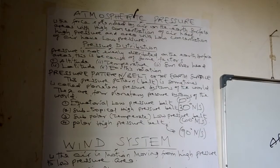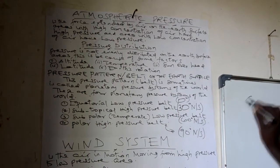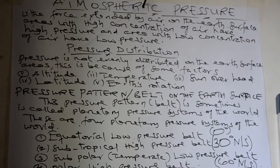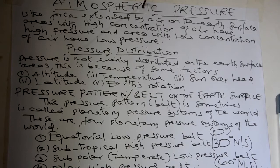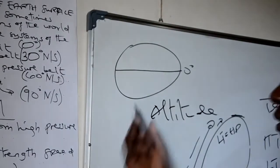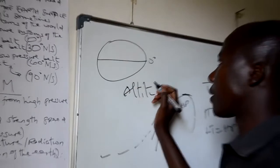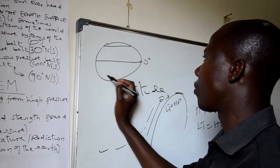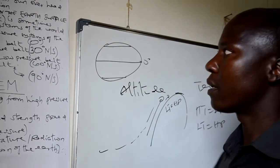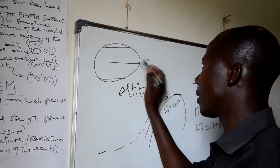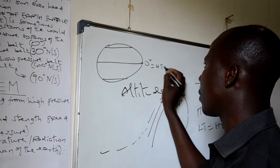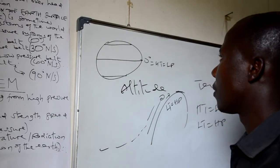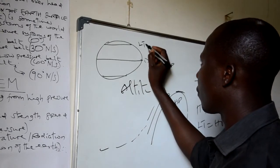Another factor influencing the distribution of pressure is sun overhead. When you draw our earth or our sphere, the line which divides the earth into two parts is the equator. When the earth is revolving on its axis, the sun can be nearby the equator or far away, either toward Cancer or Capricorn. Therefore, when the sun is overhead a particular area, it is associated with high temperature and low pressure. But wherever the earth is far away from the overhead of the sun, it is associated with low temperature and high pressure.